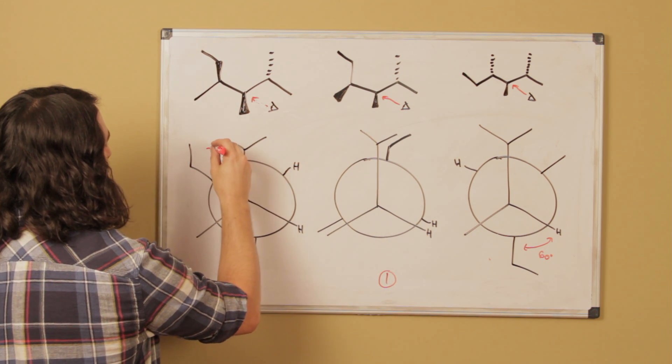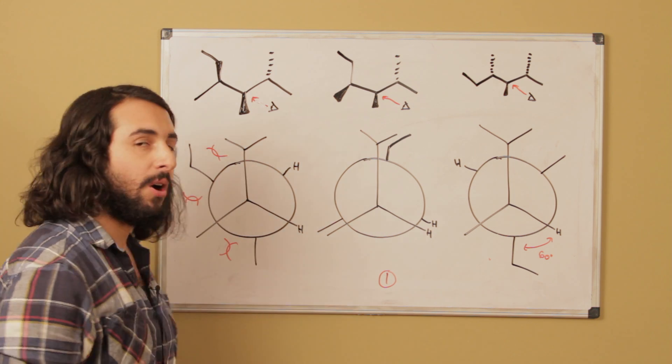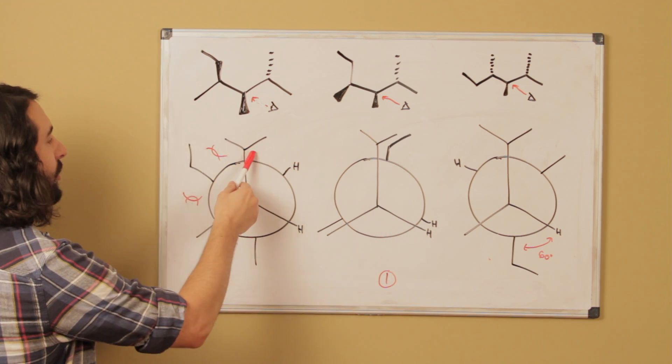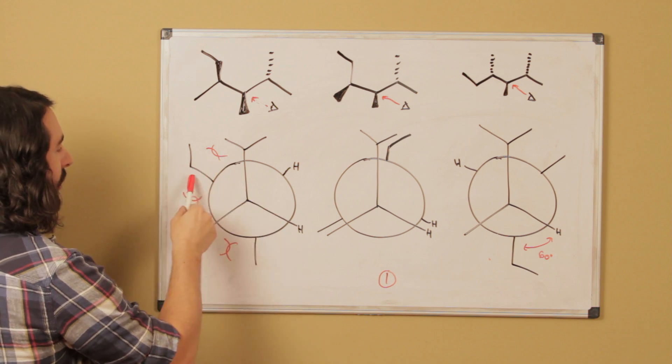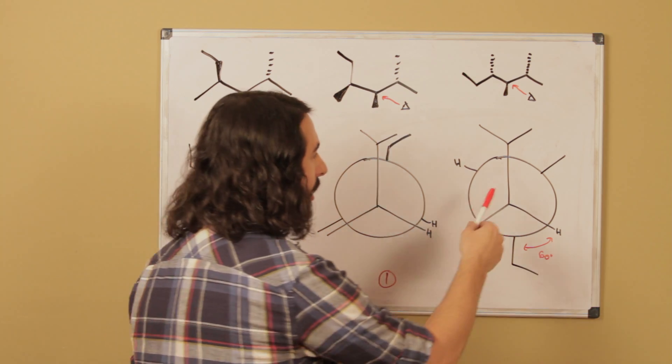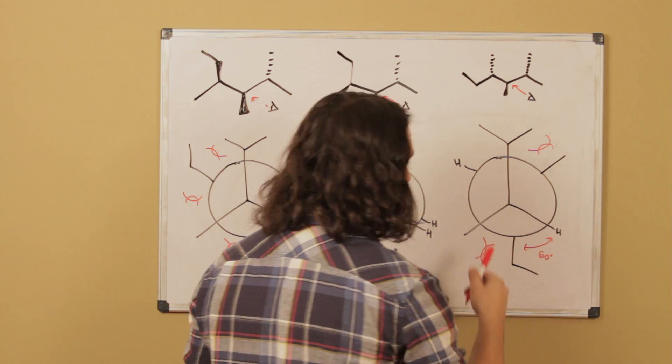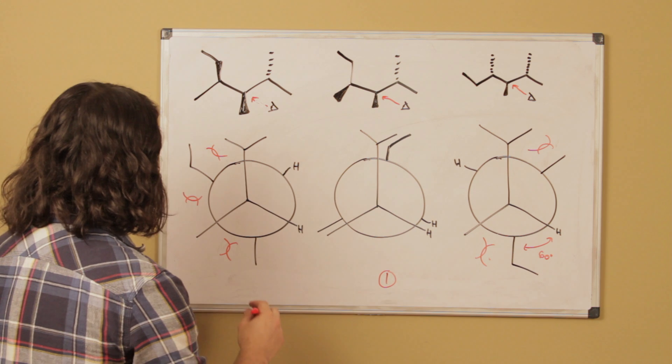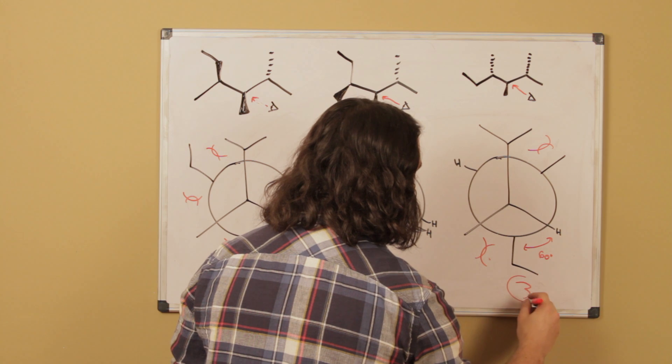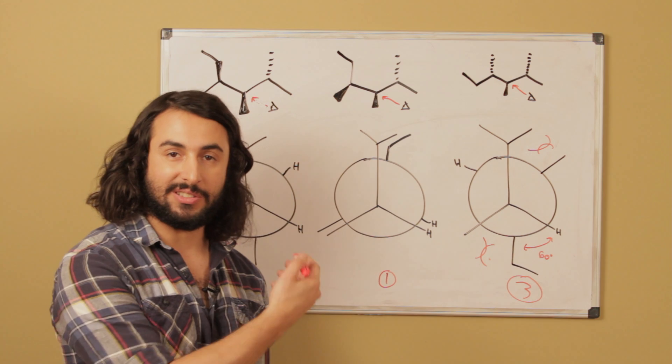So let's demarcate all the gauche interactions. There's one there, there's one there, there's one there. We're going to mark gauche interactions as alkyl groups that are gauche to one another. So this isopropyl and ethyl are gauche, this ethyl and this methyl are gauche, and these two methyls are gauche. So that's three gauche interactions. Over here we've got an isopropyl and a methyl that are gauche, and then we've got a methyl and an ethyl that are gauche. So that's only two gauche interactions. So certainly this one is going to be the next most stable, but this one is going to be the most stable, because not only is it staggered, but it also has fewer gauche interactions than number two.